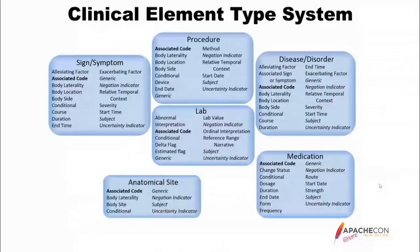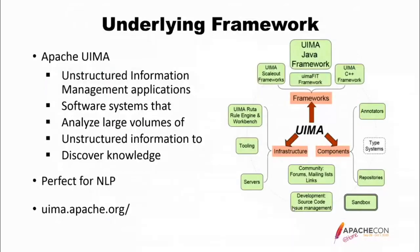All of this in cTAKES is put into a clinical element type system, which in Java is implemented through a series of classes. You can see a series of higher-level attributes that belong to the clinical elements, and each one has in bold an associated code — this is the CUI, a normalized unique identifier. cTAKES is built upon Apache UIMA, the Unstructured Information Management for Applications — software systems that analyze large volumes of unstructured information to discover knowledge.